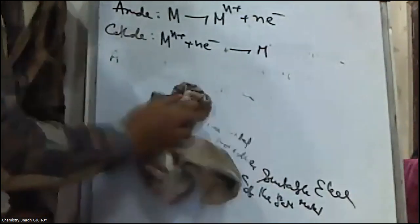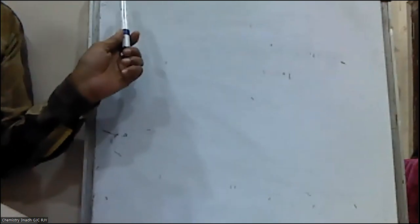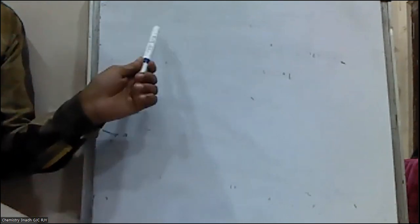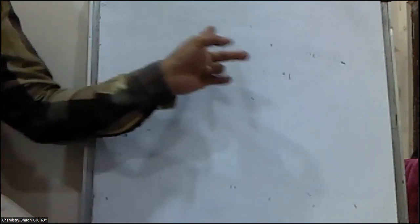In the electrolytic refining method, the impure metal which is needed to be purified is taken as anode. A strip of the same pure metal is taken as cathode. These two are kept in a suitable electrolyte of the soluble salt of the same metal. When electricity is passed, the anode oxidizes to metal ions which go into solution, move to the cathode, and deposit as pure metal. We get highly pure metals by this electrolytic refining method.